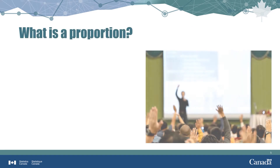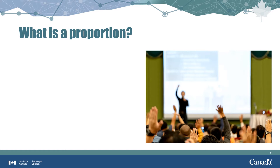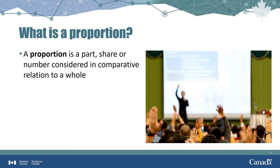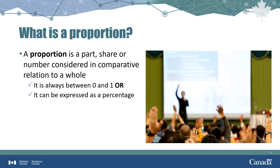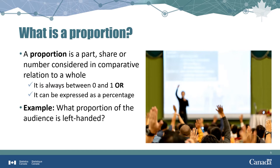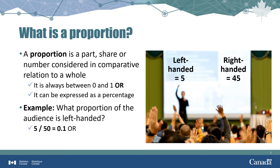Let's start with proportions. A proportion is a part, share, or number considered in comparative relation to a whole. The smallest value for a proportion is 0, while the largest possible value is 1. A proportion can be expressed as a percentage by multiplying its value by 100. Proportions are useful when you want to compare a number to a total. For example, in an audience of 50 people, 5 are left-handed.